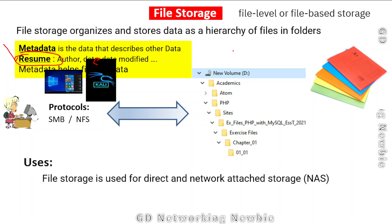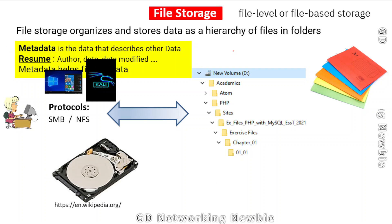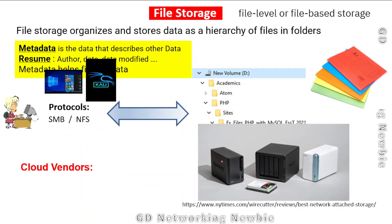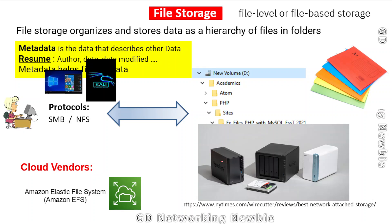File storage is used for direct attached storage and network attached storage. With network attached storage we can access our data over a network. There are also cloud service providers offering file storage services — for example, Amazon has a service called EFS, Elastic File System, which is a file storage service offered by a cloud service provider.